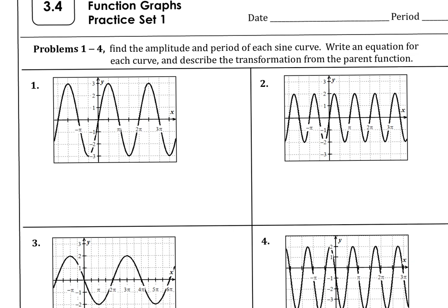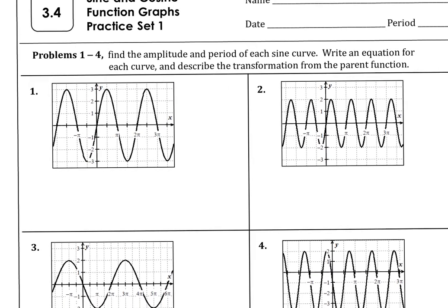I want to work through just a couple problems from each section — both sine and cosine — so you have an idea of what's going on. The first section is all about the sine curve. We're finding both the equation after finding the amplitude and the period for each curve, and then we want to describe the transformation from the parent function.